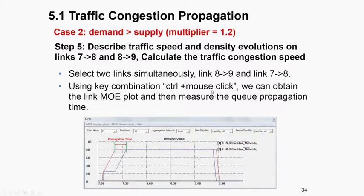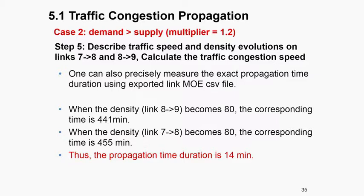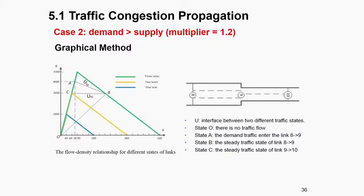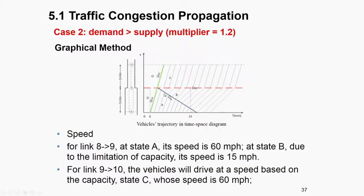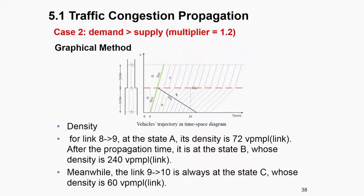By comparing two links — from 7 to 8 and 8 to 9 — you should be able to calculate the propagation time of about 40 minutes. Using the Control key plus mouse click, you can obtain link MOE statistics for multiple links. The propagation time is 40 minutes — that is the standard answer. In the results, states O, A, B, and C correspond to different statistics. At state B, the speed should be 15 miles per hour and the density should be 72 vehicles per mile per lane.